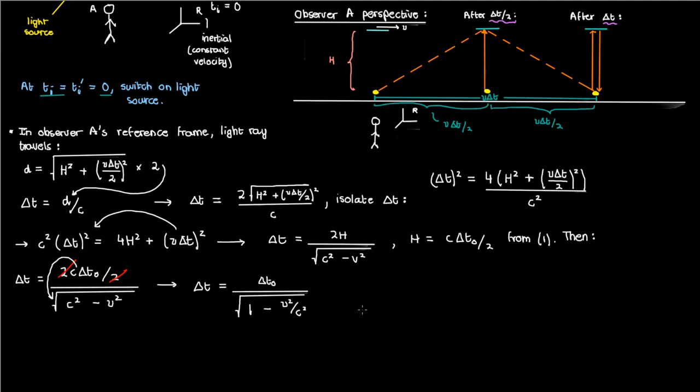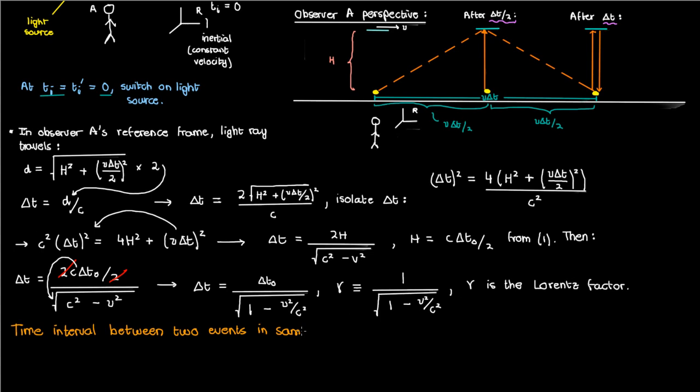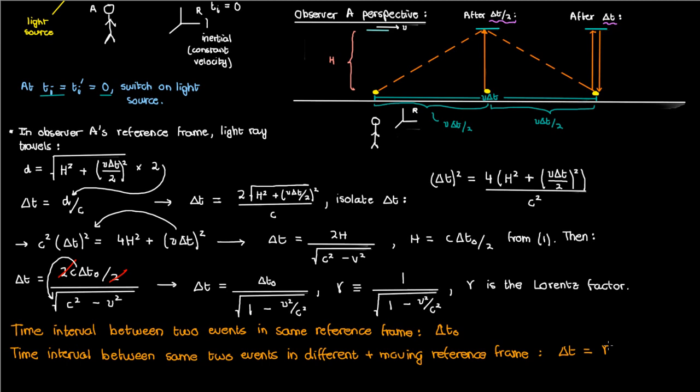This equation says that the time interval between two events in one reference frame, delta_t0, changes in a different reference frame moving with respect to it, by a factor of 1/sqrt(1 - v²/c²), which is also defined as gamma, the Lorentz factor. If a clock in your own reference frame measures a proper time delta_t0 between two events, an observer in a moving frame will measure a larger time interval delta_t = gamma * delta_t0.